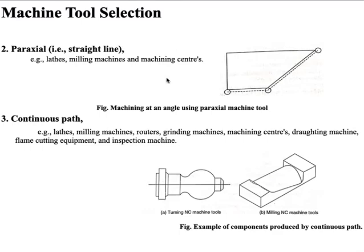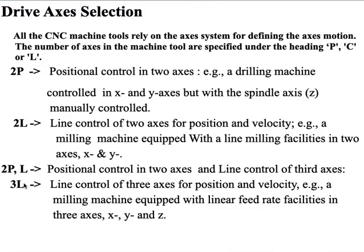In a continuous path machine tool — examples include lathes, milling machines, routers, and grinding machines — the slide motion in more than one axis is controlled continuously and simultaneously. This system enables profiles in two-dimensional or three-dimensional shapes to be contour-machined. Examples of these include milling machines.